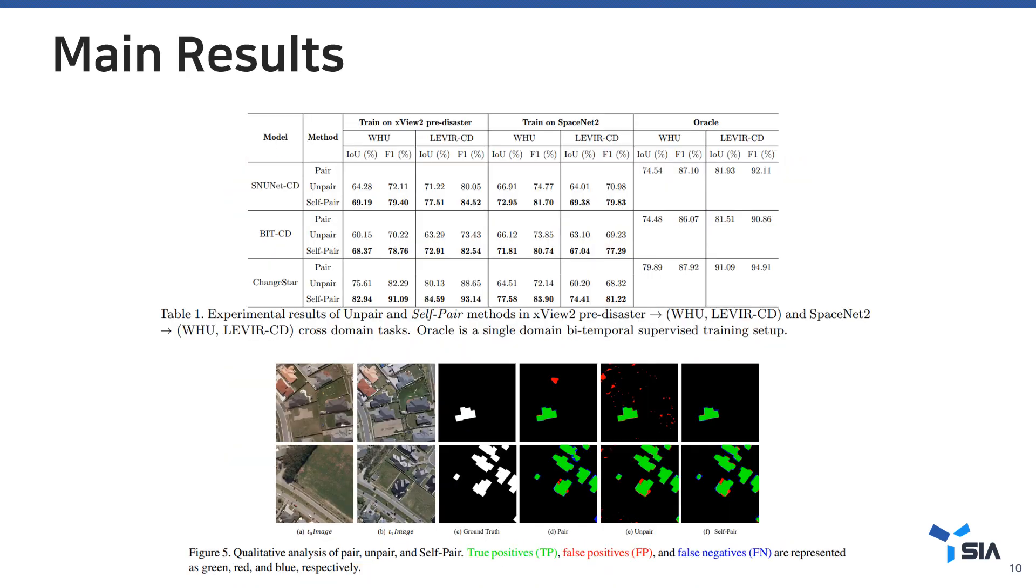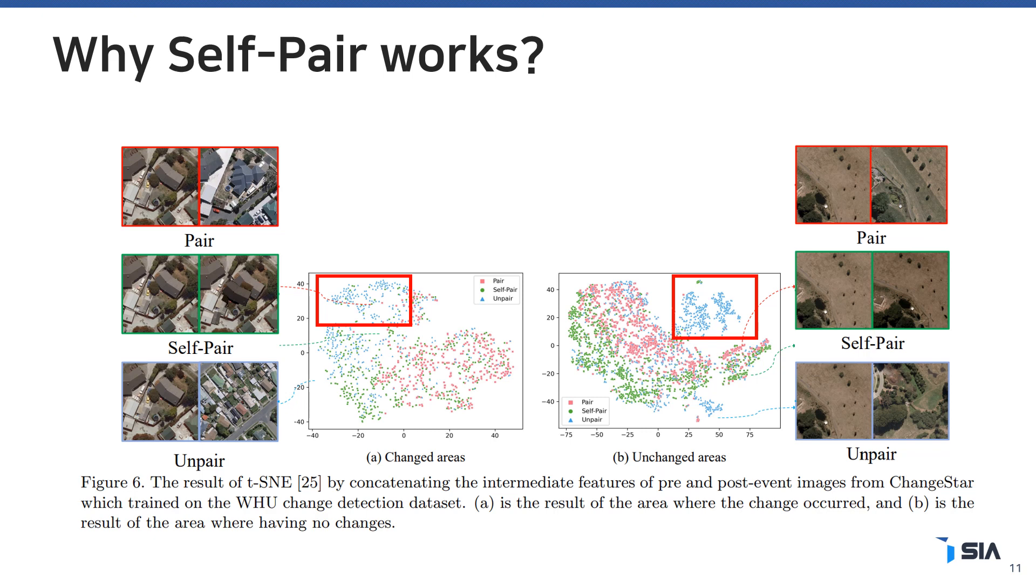Our proposed method outperforms previous unpaired single-temporal methods by a large margin. Sometimes, we achieve competitive performance compared to models trained with paired bi-temporal supervision. By mapping feature vectors into 2D space, we find that paired and self-pair share similar clusters, especially for unchanged areas.